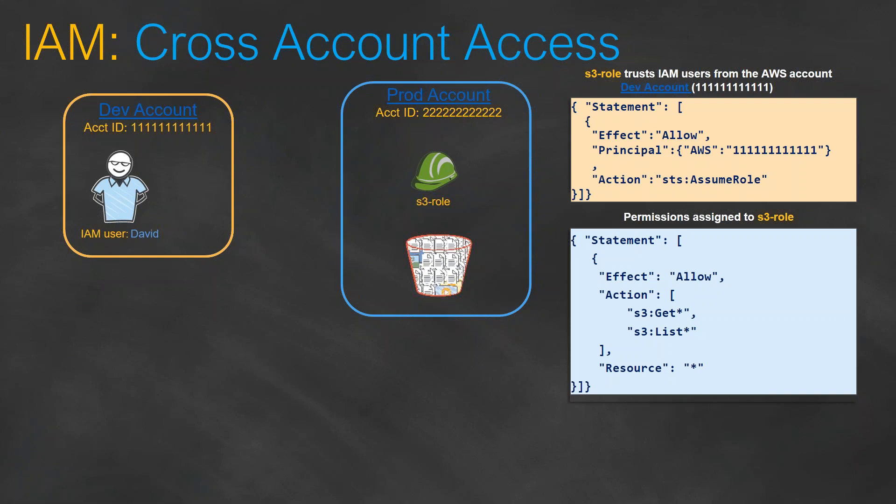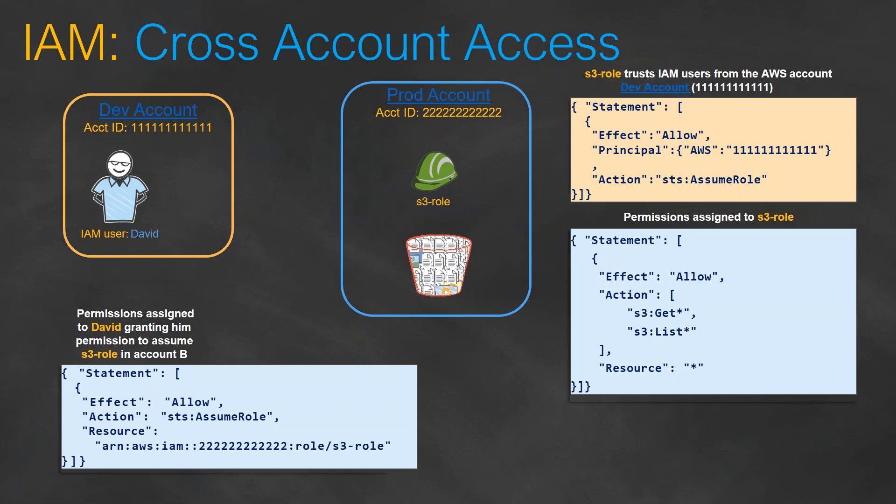Now we've done the settings on the production account. The configuration change you need to make on the dev account is to assign a permission for David himself — you're going to say he is able to assume the S3 role on the production account. You'll take the ARN of the S3 role that you created and put it in here.